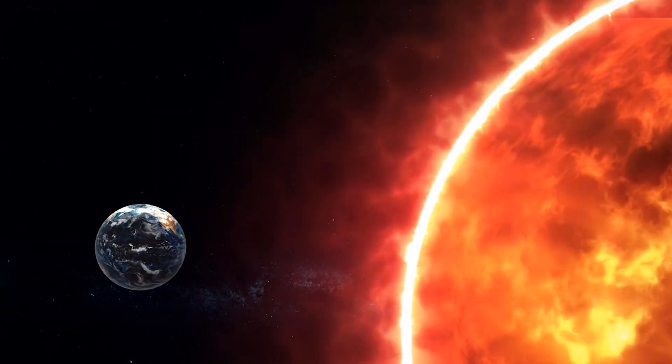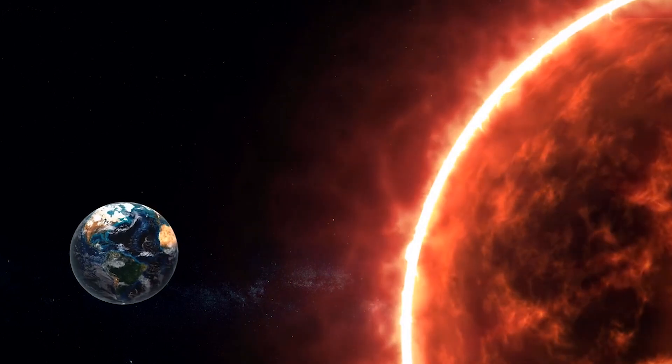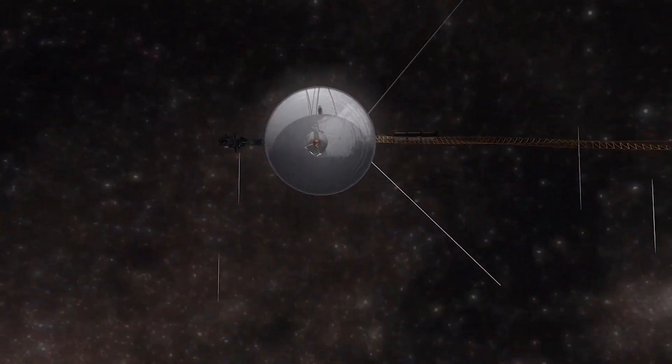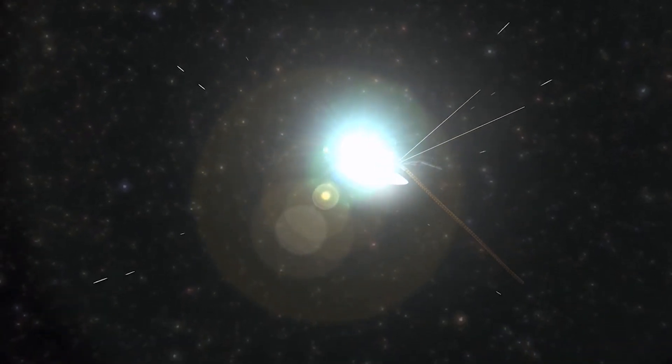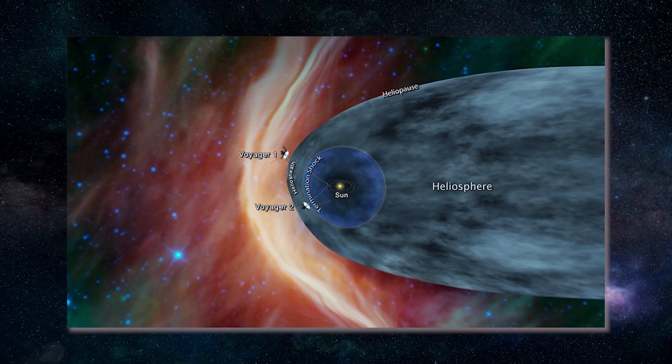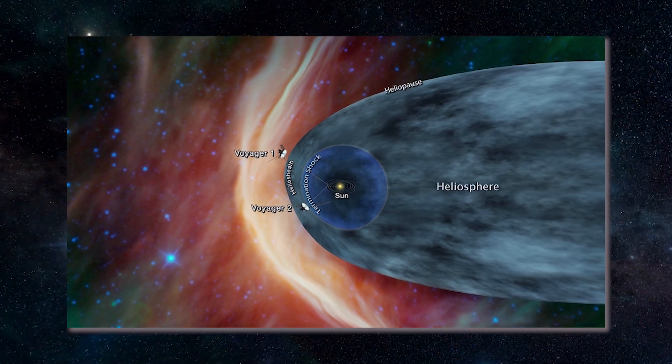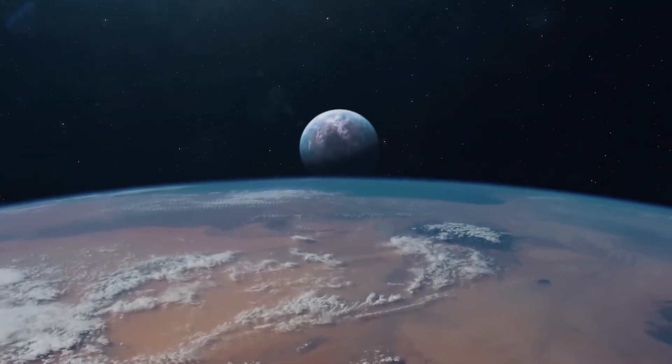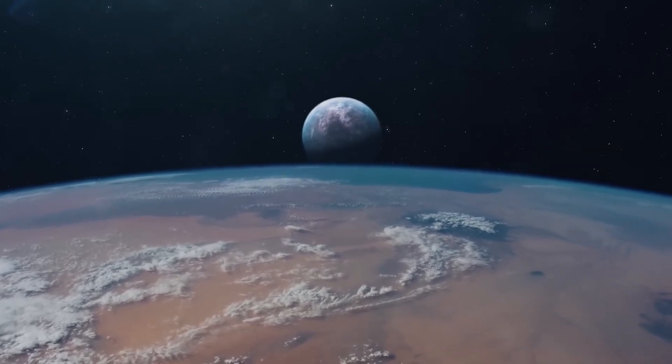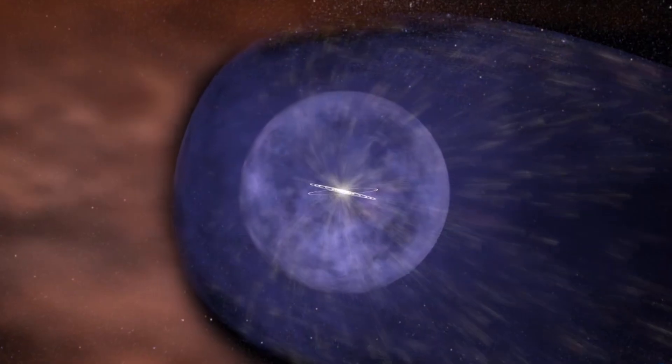In 2012, Voyager 1 poked through the bubble's outer skin at about 121 astronomical units. Voyager 2 followed in 2018 at 119 AU, exiting at the opposite flank. Their instruments detected a sudden rise in galactic origin particles, confirming that the heliopause, the bubble's edge, is less a wall than a porous membrane.